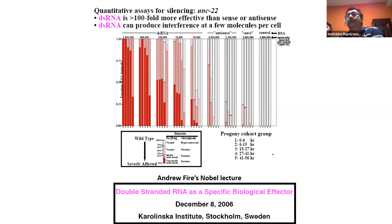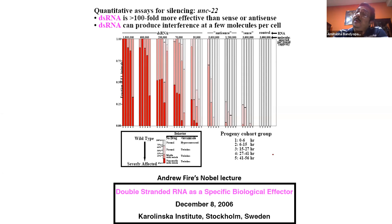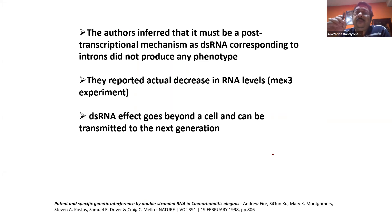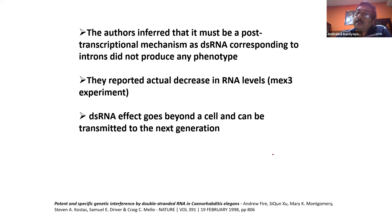Even if there are few molecules of double-stranded RNA, it can produce the interference effect. That's why this experiment was important — they originally hypothesized that in Kemfusa's experiment there was some contaminating double-stranded RNA which actually caused the interference, and to demonstrate that they had to show that even at very low dosage, double-stranded RNA can cause interference. They inferred it must be a post-transcriptional mechanism, as double-stranded RNA corresponding to introns did not produce any phenotype. The MEX3 experiment showed the actual decrease in RNA levels, and the double-stranded effect goes beyond the cell and can be transmitted to the next generation.